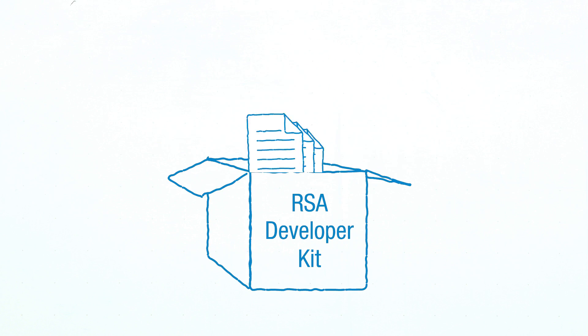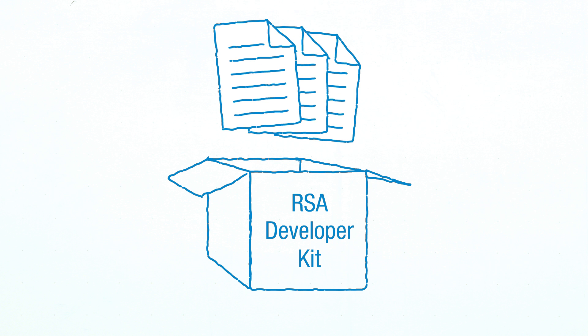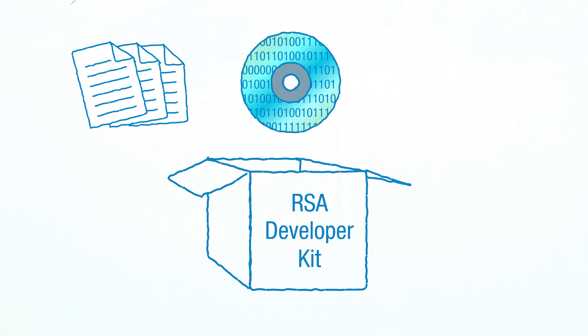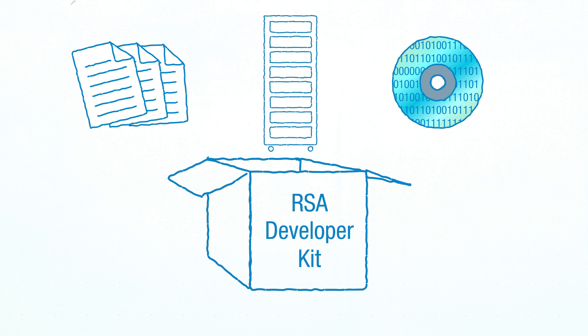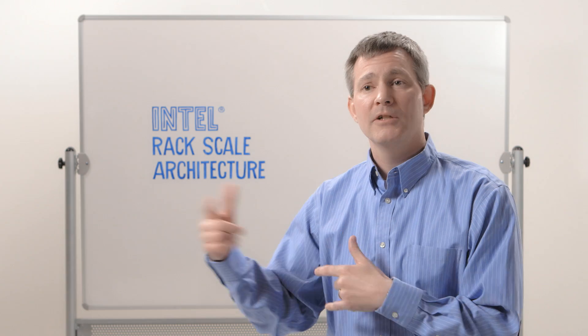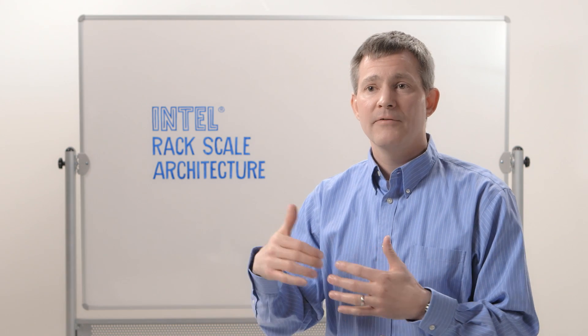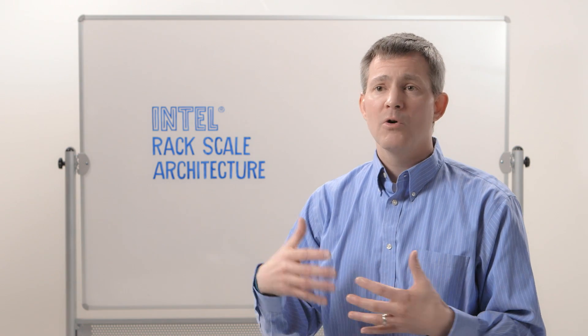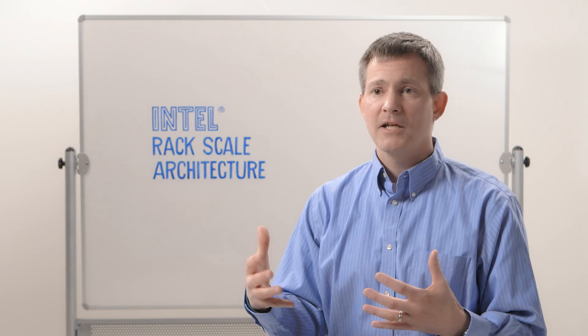The Developers Kit includes reference architecture documents, industry standard APIs, and the software development platform. Together, these enable our ecosystem partners to develop their hardware and software stacks and their specific implementations that align with the RSA capabilities. We're seeing a growing list of RSA-aligned partners who will be bringing products to market in 2015.